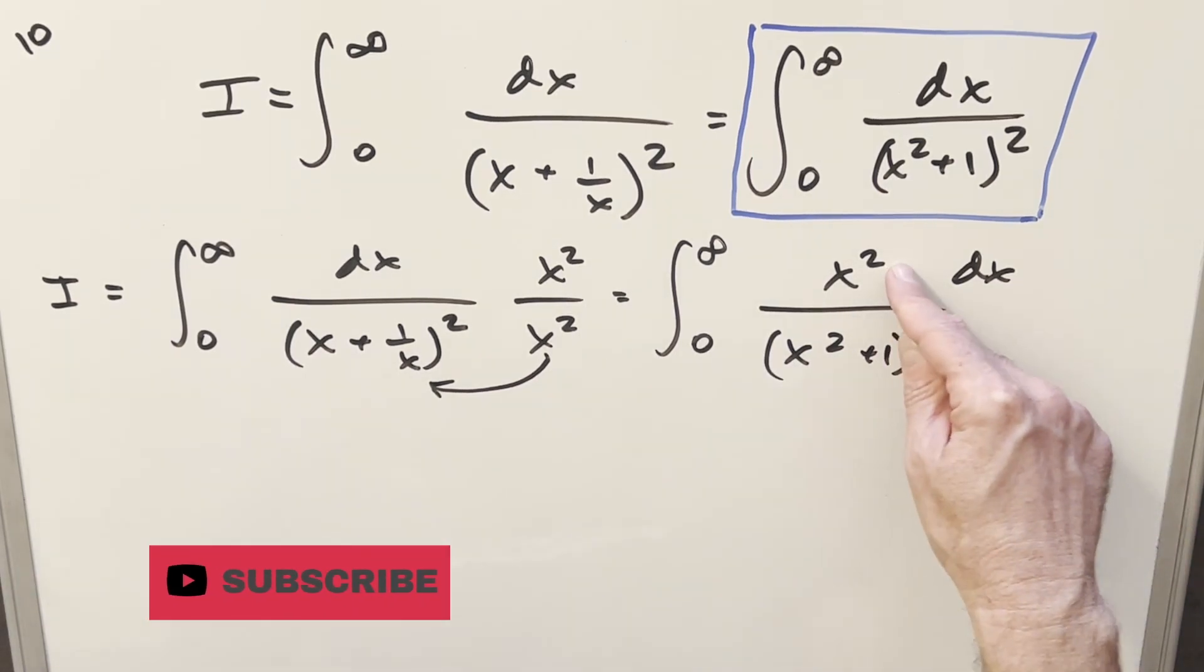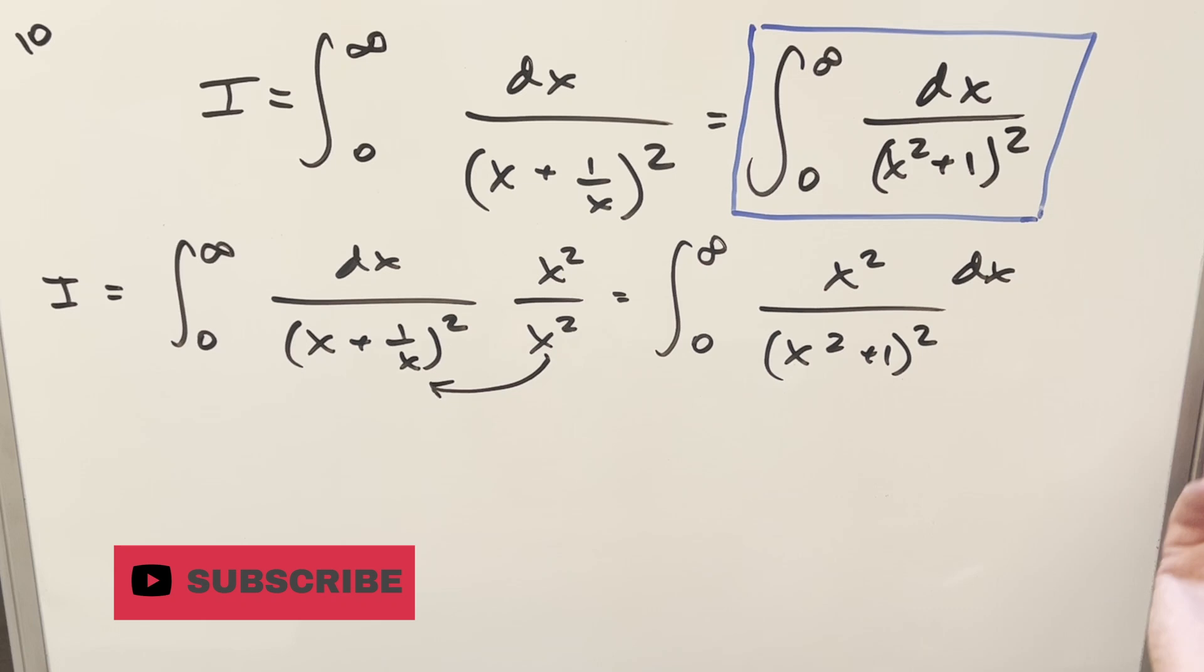you could just continue with this method. Add a one here, you'll get cancellation, you'll have a minus one. So you could do it that way. That way is fine too. But what I want to do is notice,